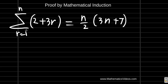Let us prove this equation by using mathematical induction. It says the sum from R equals 1 to N of 2 plus 3R is equal to N divided by 2 times, and in bracket here we have 3N plus 7.